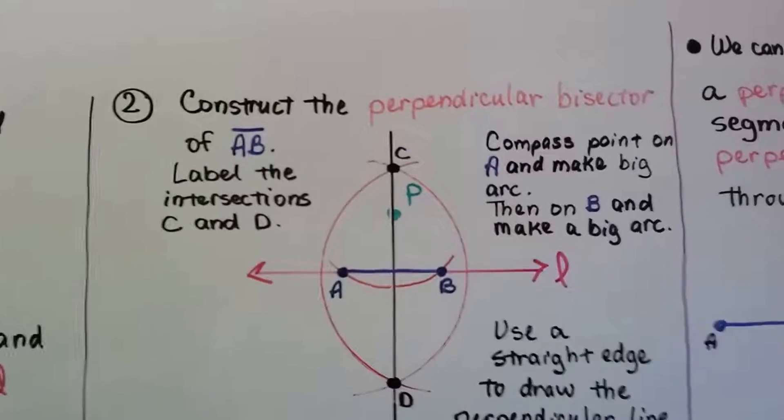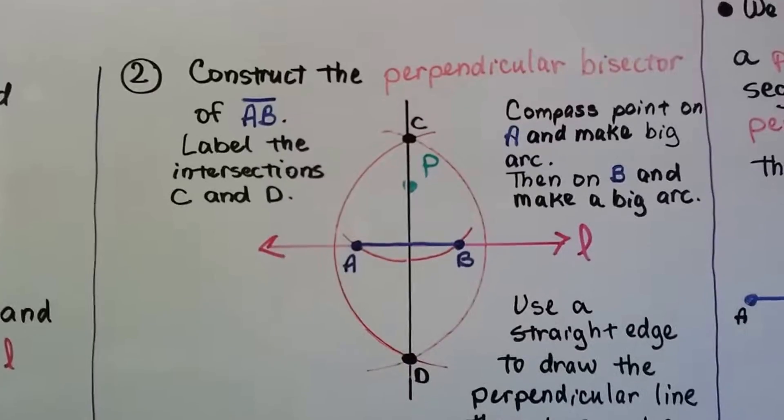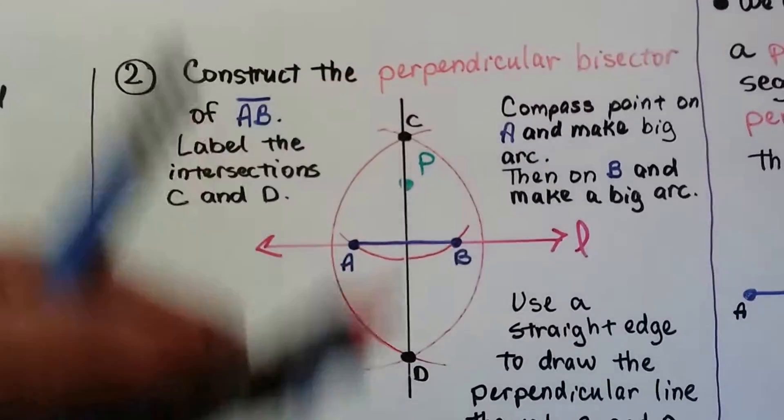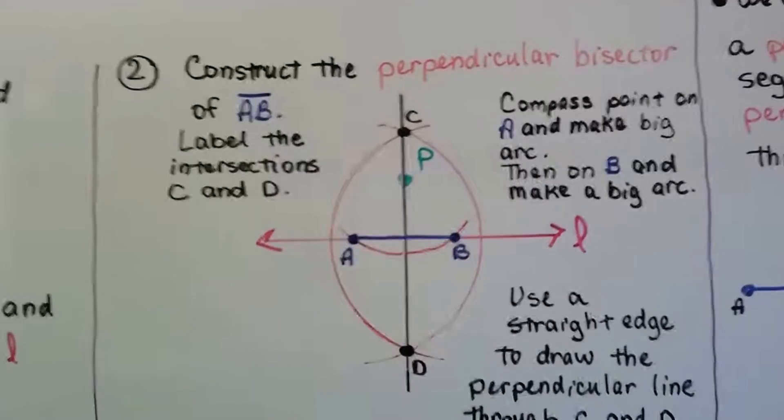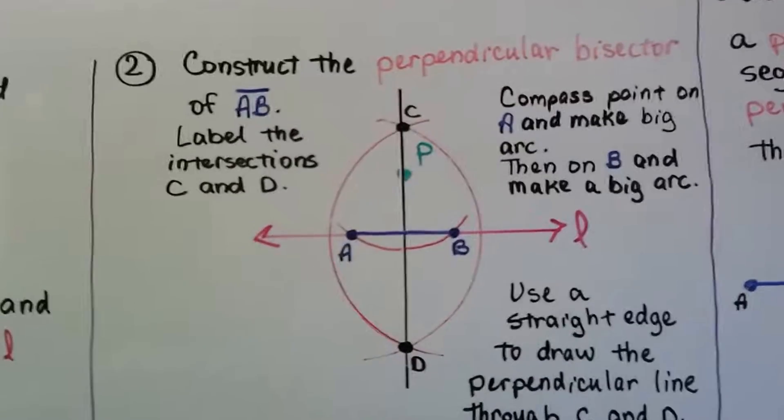Then we construct the perpendicular bisector of segment AB and label the intersections C and D. I said C and D so that you could follow me, but you don't have to label them. We know they intersect there, because we're just trying to make a perpendicular line.